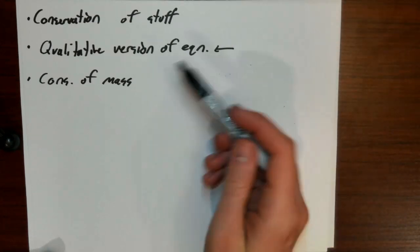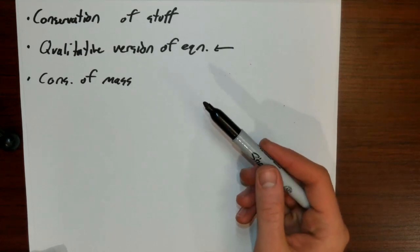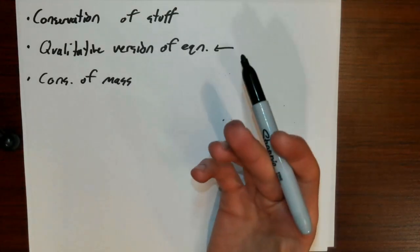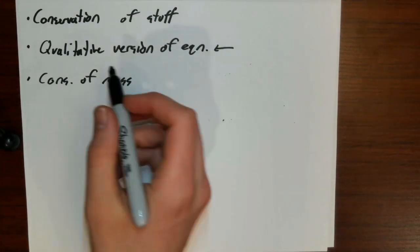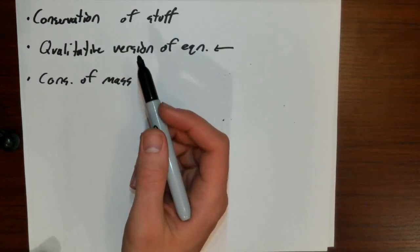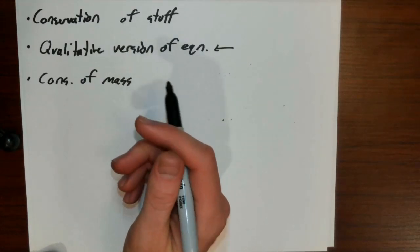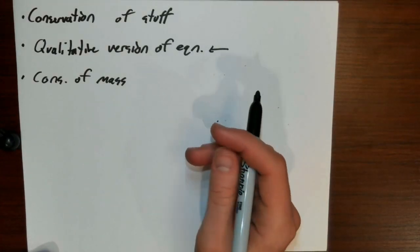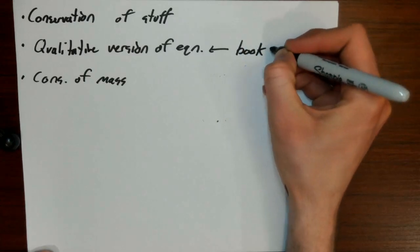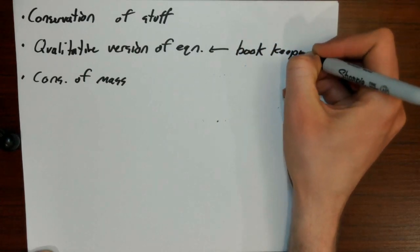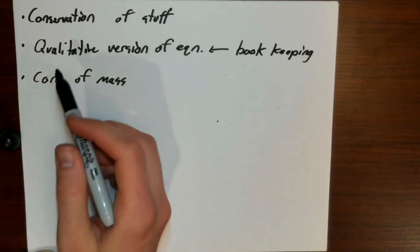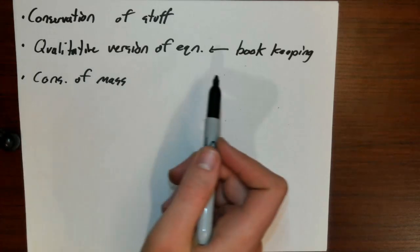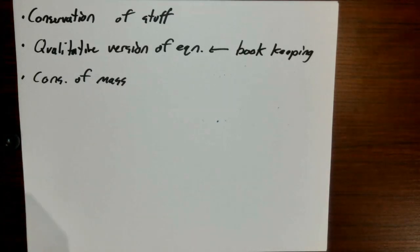A lot of times in fluid mechanics it's not necessarily the physical concepts that are challenging to most students, but it's the bookkeeping — making sure you've accounted for all your ins and outs, got all the signs right, and haven't put something in twice or missed something entirely. So really the trickiness in fluid mechanics is oftentimes not with physical intuitions about phenomena, but rather with the bookkeeping. We're going to talk about the bookkeeping needed to do conservation of mass.